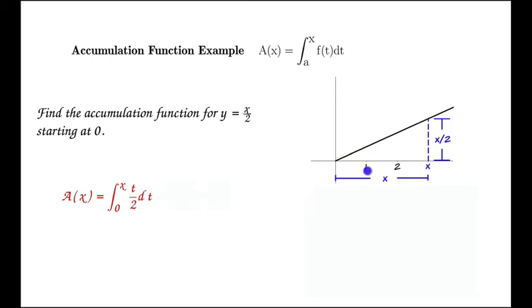This triangle has a base of x, because we're going out to x, and it has a height of x over 2. We got the height by taking the x and substituting it in. x over 2 is y, so this is just y. It's x over 2.